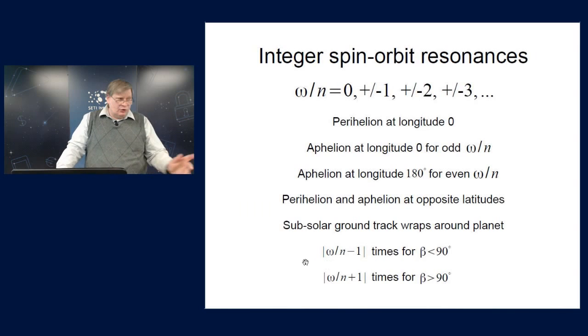So we're going to need these to understand spin-orbit resonances. It's convenient to divide them into two classes. And the first is the integer spin-orbit resonances. By that I mean that this ratio of the planet's rotation rate to its mean motion is a whole number, like 0, plus or minus 1, 2, 3, etc.